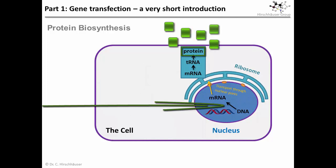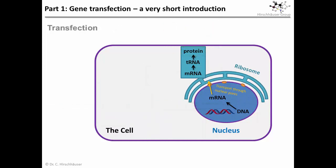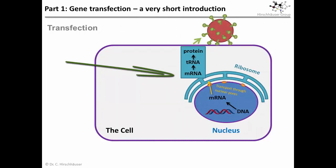That protein can then do whatever this particular protein does. In the case of a Covid vaccine, the cell is told to produce the spike protein of the coronavirus, so that the body can form antibodies against this particular structure without having to deal with all the rest of the virus. All we need for that is a piece of DNA or RNA which encodes for this particular protein. And engineering a DNA sequence which encodes for a known amino acid sequence is quite straightforward nowadays.